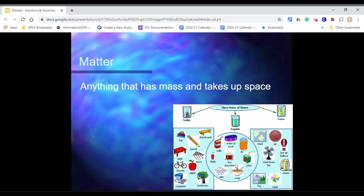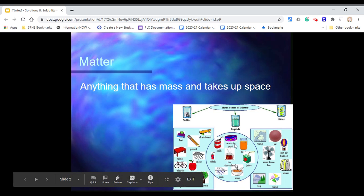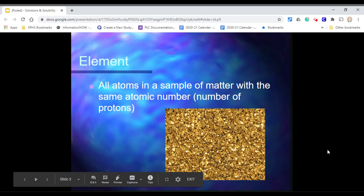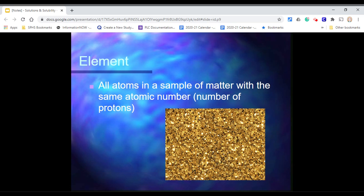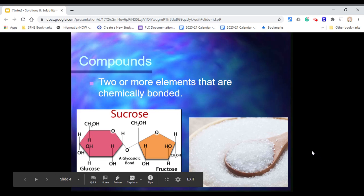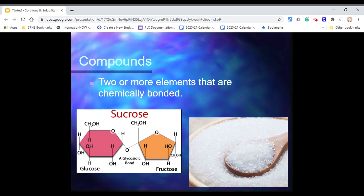Matter is anything that has mass and takes up space, so we've got lots of different examples there. States of matter: solid, liquid, gas, and occasionally plasma. All atoms in a sample of matter with the same atomic number or number of protons make up an element. Compounds are two or more elements that are chemically bonded.